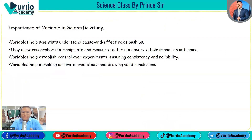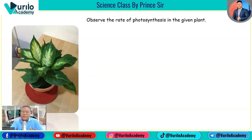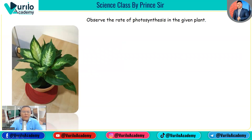Now here is a question for you: observe the rate of photosynthesis in a given plant. What would be the dependent variable, independent variable, and controlled variable? Write your answer in the comments — just observe and think. This type of question can also appear in exams.